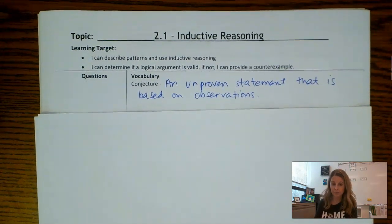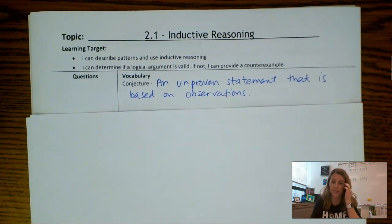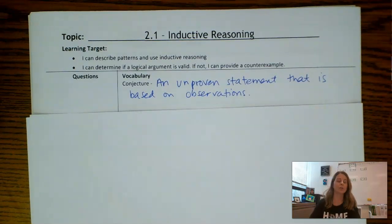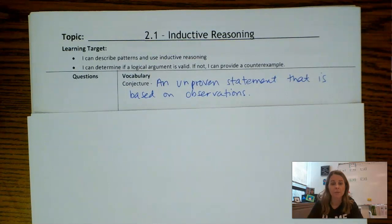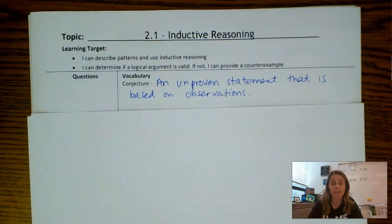Our first definition: conjecture. A conjecture is an unproven statement that is based on observations. A conjecture is just something you say or something you notice happening — you see a pattern happening and you make a conjecture. For example, if Monday seems to always be sunny, say the last three Mondays have been sunny, then my conjecture might be that it is sunny on Mondays. It's not necessarily a proven statement, but it's just based on observations.